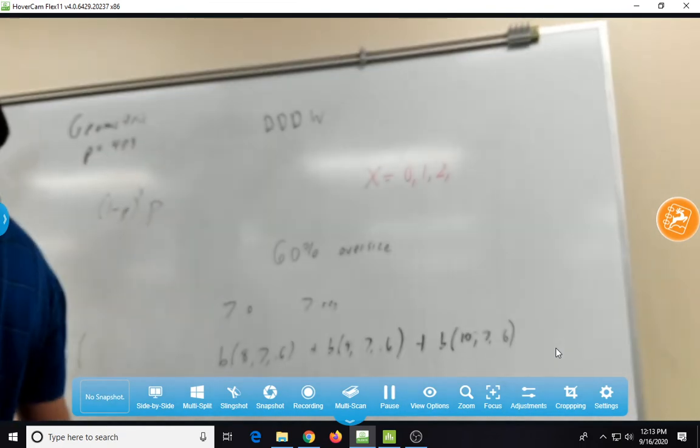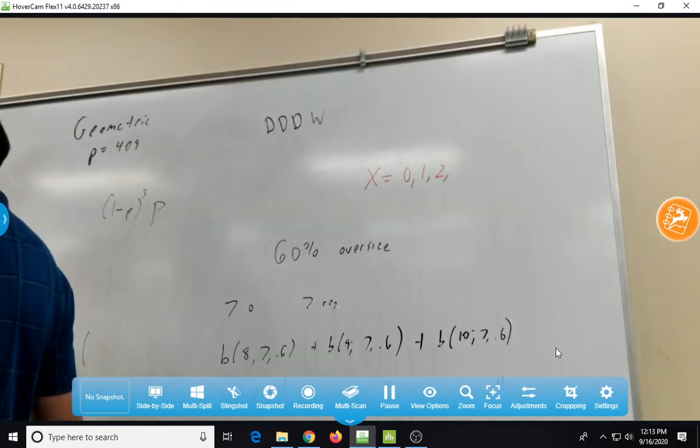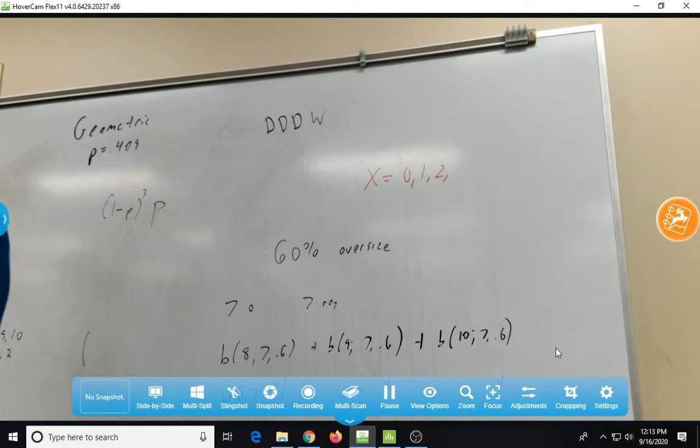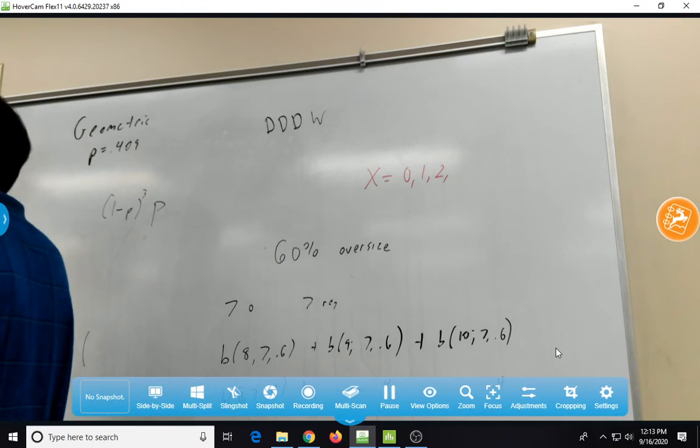Or if nine people wanted the regular size, only one wanted the oversized. So this is how you calculate the probabilities for these successes. And then Andrew's on the right way as far as figuring out what you would do to figure out. Use the CDF to find the probabilities.